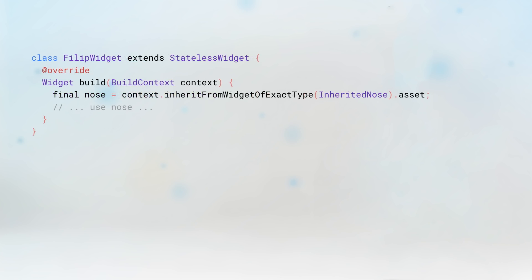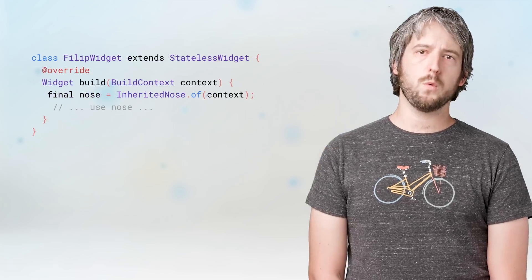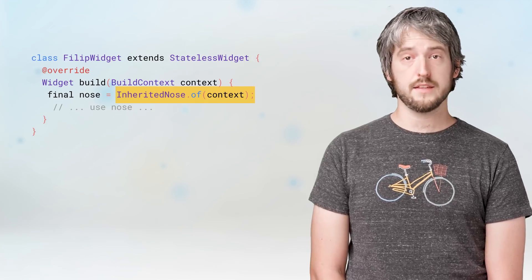Now, any descendant of our InheritedNose can get access to it in its build method by calling context.inheritedWidgetOfExactType. By calling this method with a type of your custom InheritedWidget, you tell Flutter to go up the tree, starting from the build context, and look for a widget that matches that type. But to make things simpler and more readable, InheritedWidgets often include a static method called of, which calls the inheritedWidgetOfExactType method for you. Now we can rewrite our code in the descendant to read InheritedNose.of(context), and that's nice.